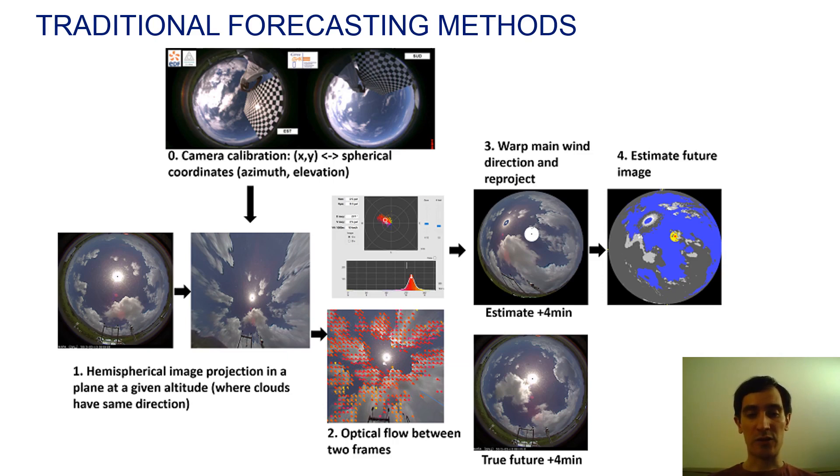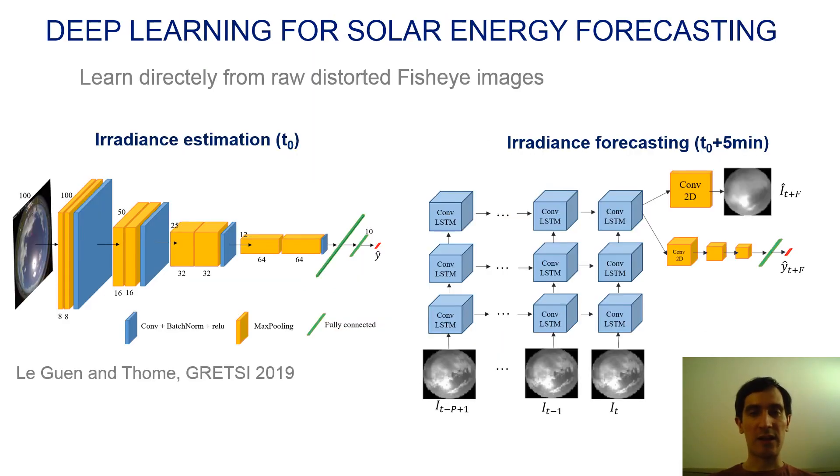The future irradiance is obtained with a segmentation method on the image and standard machine learning techniques. In this context, deep learning is an appealing solution for learning directly from large datasets of fisheye images.